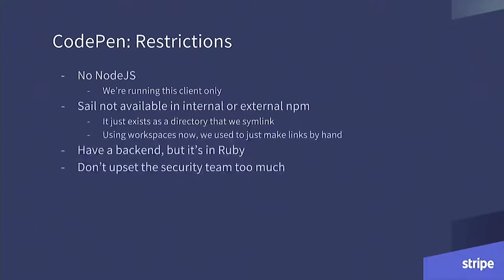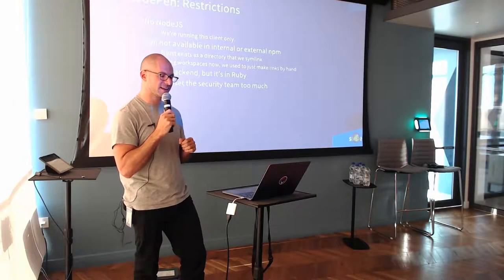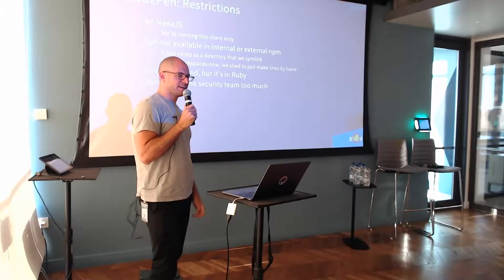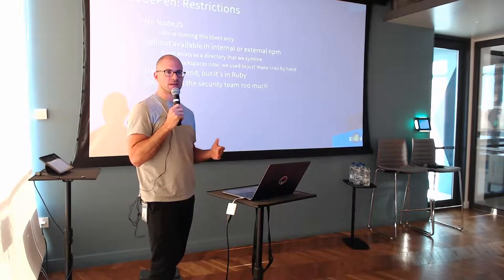Like any easy project, there are always restrictions. Stripe is not a Node shop, so setting up any fancy Node service where we punt code over, evaluate it on the server, and kick it back — which I would love to do — is off the table. We're going to run this whole thing in the client in one shot. Also, SAIL is not publicly available, and we just recently got our internal NPM working properly — sort of — so we can't just pull from NPM either.